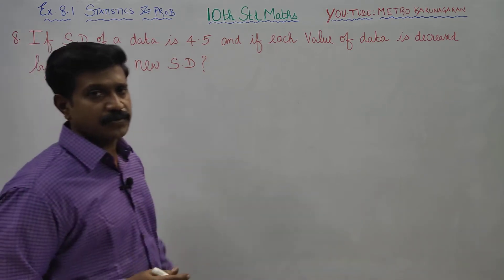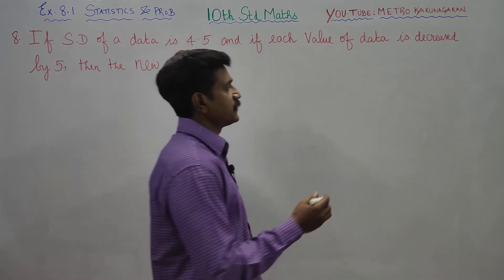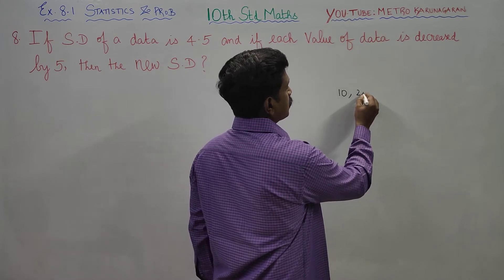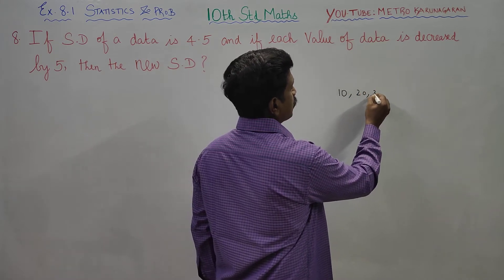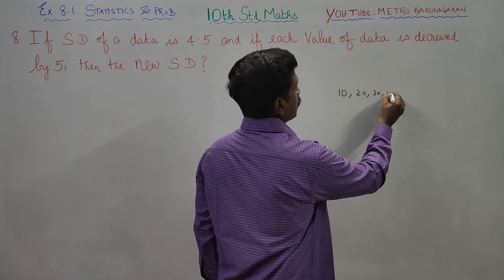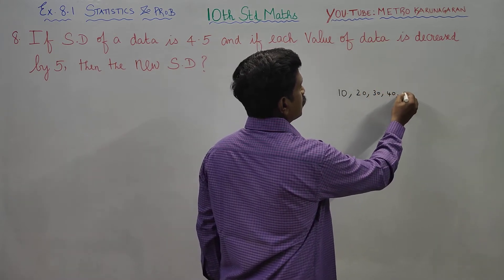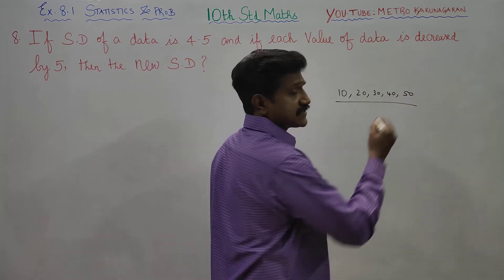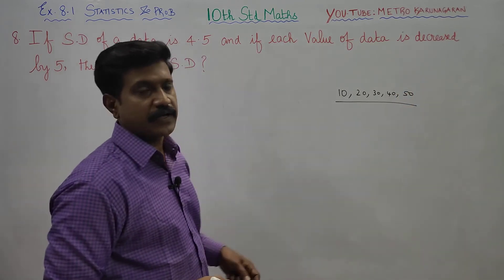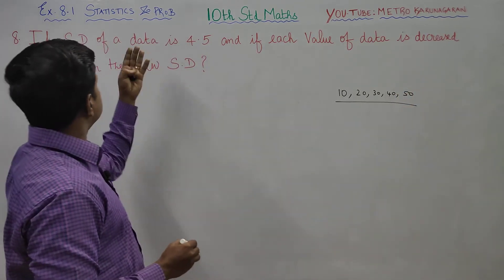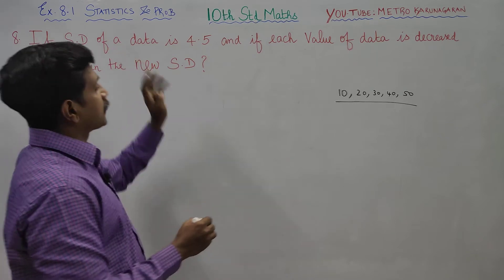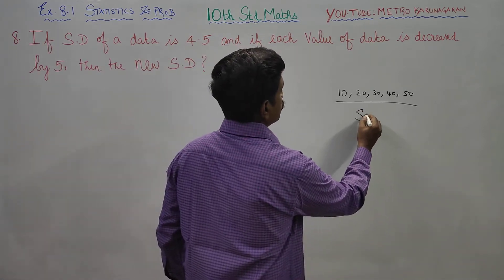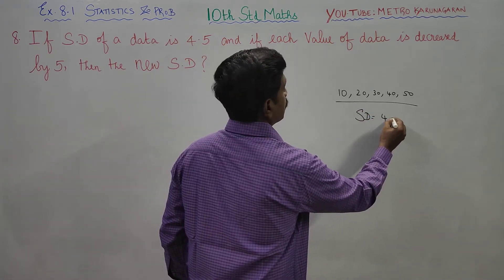For example, consider the data: 10, 20, 30, 40, 15. This is the given data. We need to find the standard deviation of this data. The standard deviation is given as 4.5.